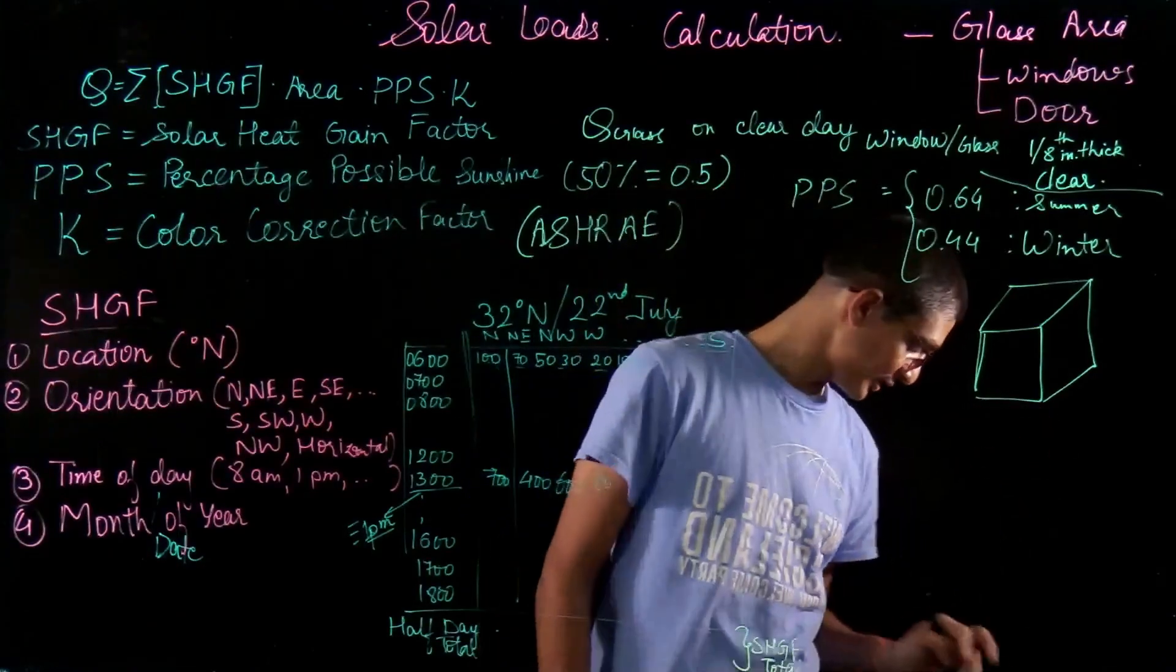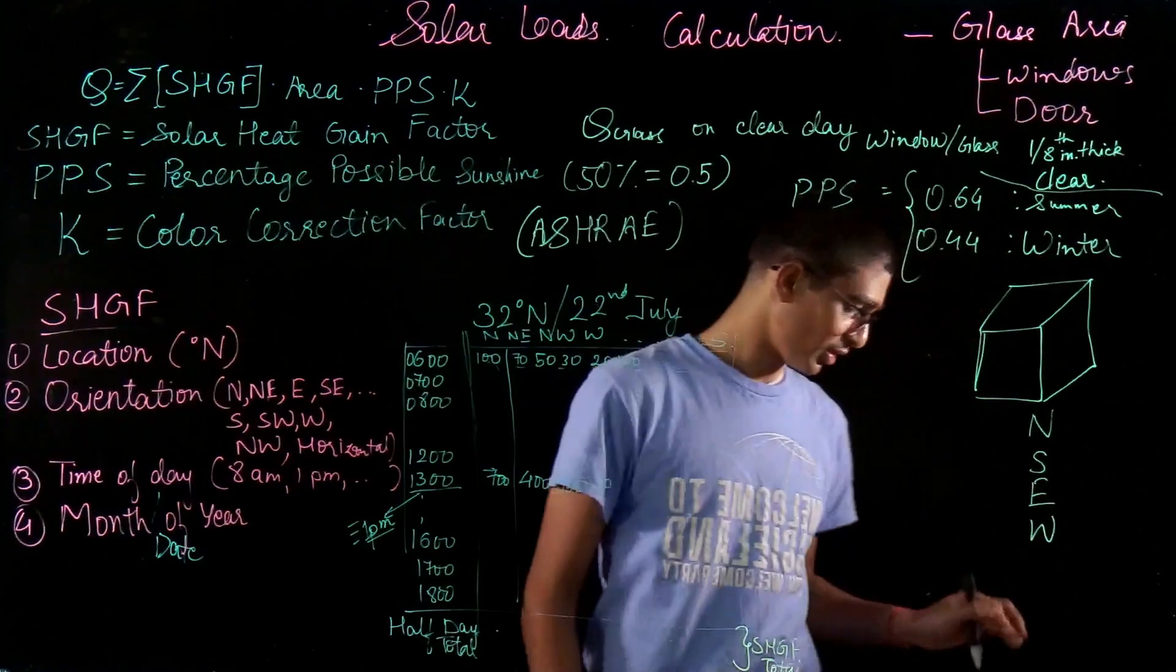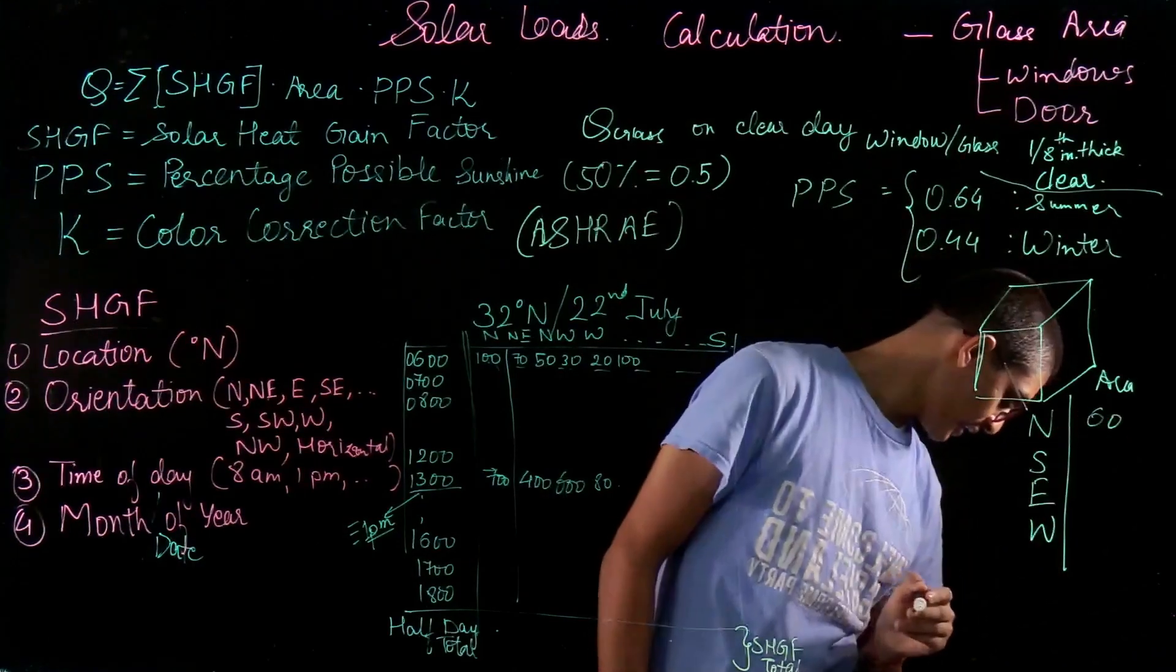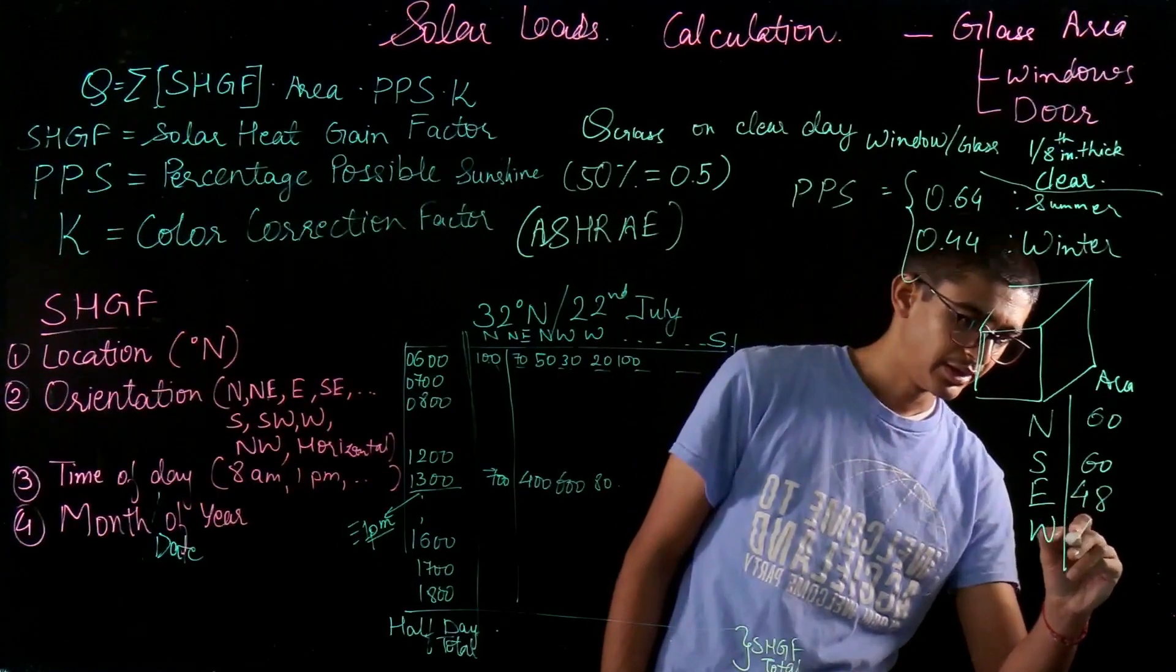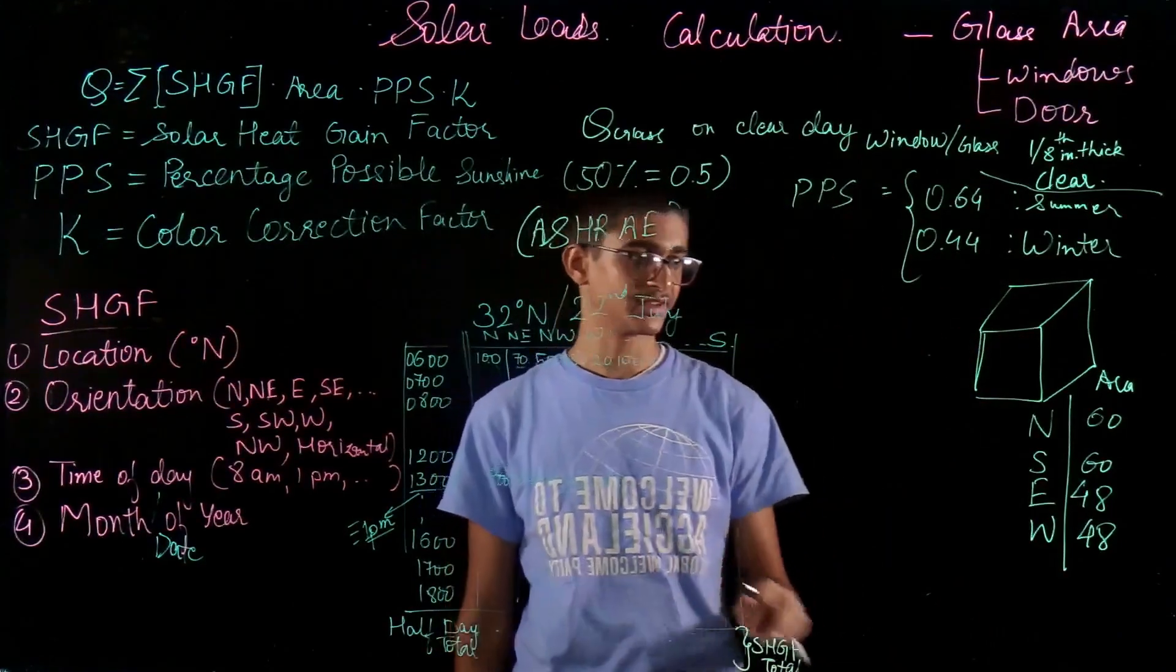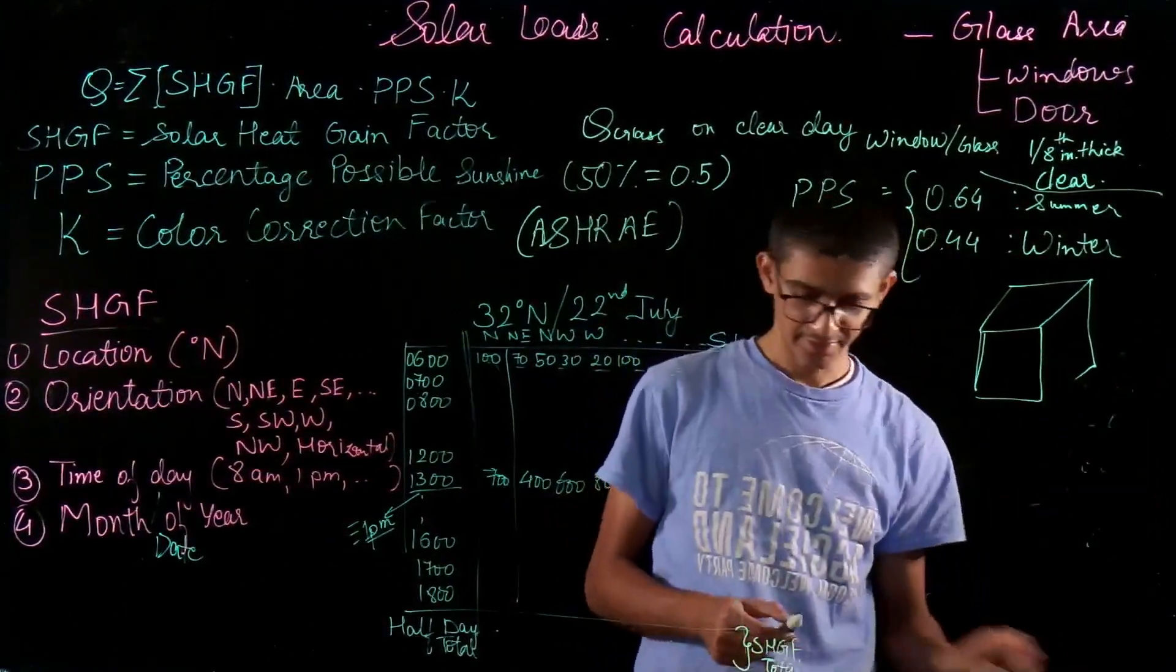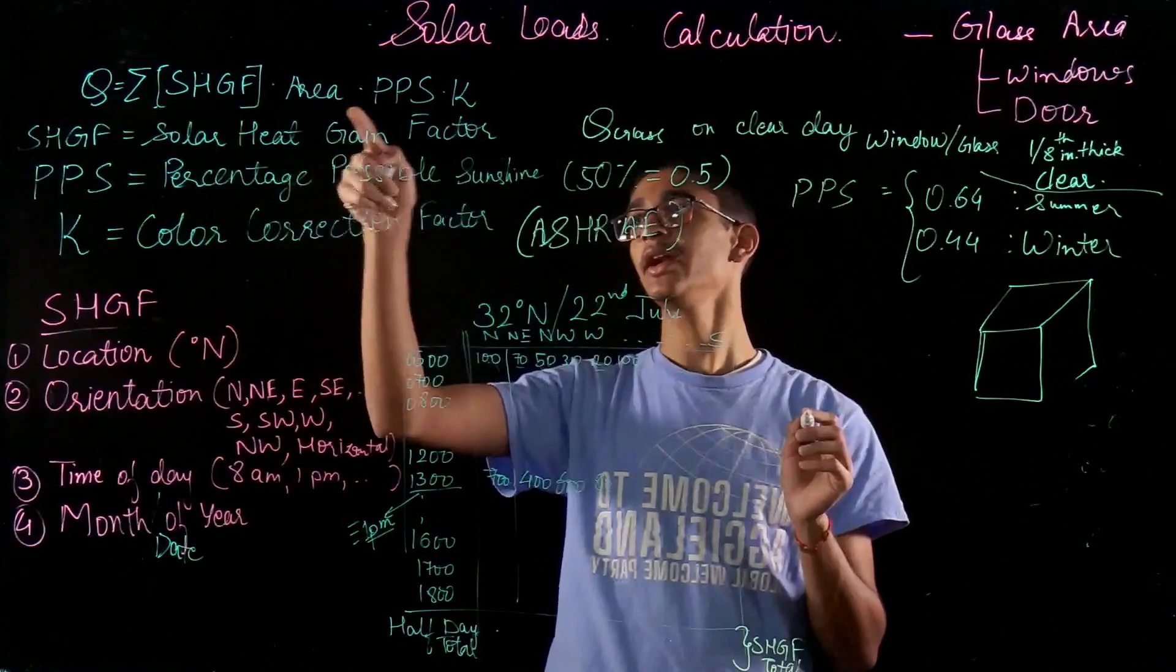For our building taken in the previous video on transmission loads, let's say we have four orientations which are north, south, east, and west. Along these four orientations, the areas are available to me. The area in north direction is 60, south direction is 60, 60 feet square, east is 48, and west is 48 feet square. That's not the same building which we took in the previous case, it is another sample building.